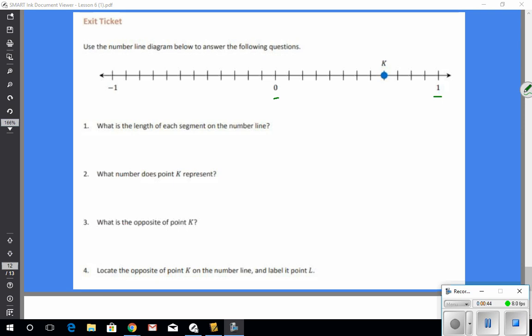So starting counting from zero, I have one, two, three, four, five, six, seven, eight, nine, ten, eleven, twelve. So one is equal to twelve twelfths. So each one of these tick marks then would be worth one twelfth. So the value of each length is one twelfth.